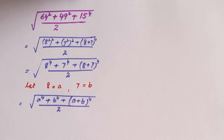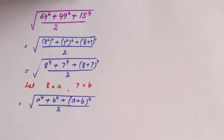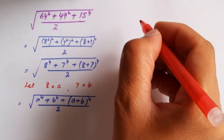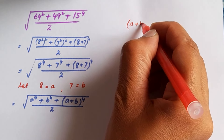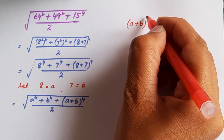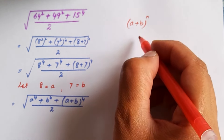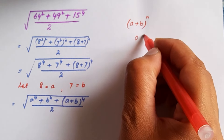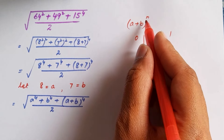Now we are going to solve (a + b) to the power 4 first using the binomial theorem. The binomial theorem gives us an expression to calculate or expand (a + b) to any power n. Let me show you how this binomial theorem works. We have (a + b) to the power n, where n is also called the index.